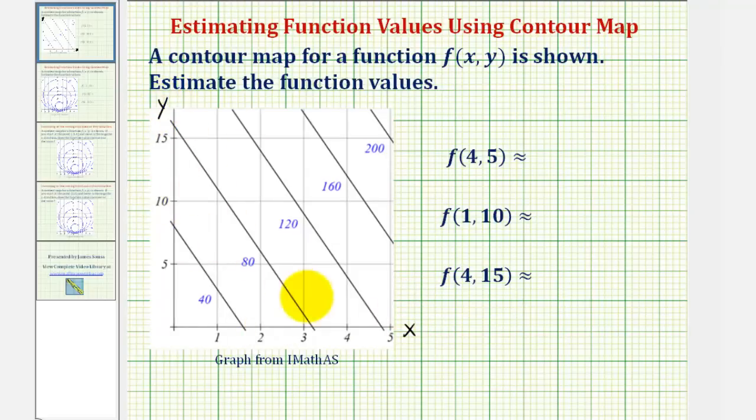And these contour lines here, often called contour curves or level curves, represent where the function values are the same. All along this first contour line, the function value is 40. All along this contour line, the function value is 80, and so on.